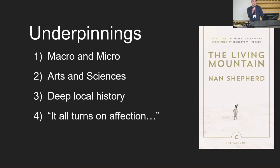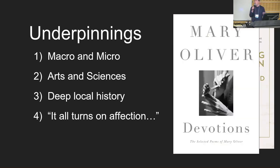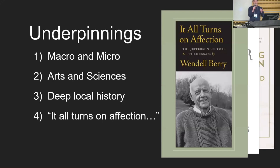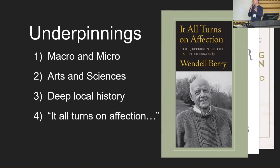It all turns on affection — a line from E.M. Forster, the great novelist — basically saying that we need to fall in love with a place. We can fall in love with the Cairngorm Mountains like Nan Shepherd did, or the Provincelands like the poet Mary Oliver did, or the forests and farms of Kentucky like Wendell Berry did. Berry's argument is that moral rightness will never be enough to conserve places — love is the stronger motivation, affection is the stronger motivation. So we're going to try to fall in love just a little bit more with Keene and the Monadnock region.